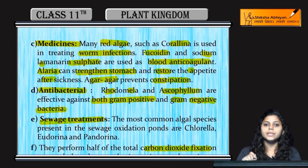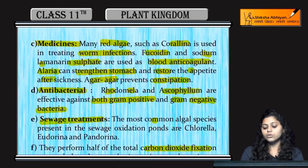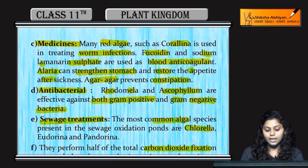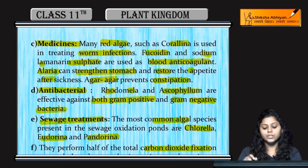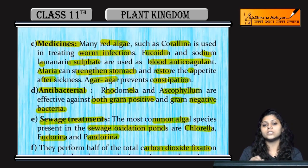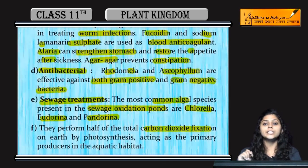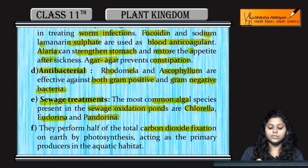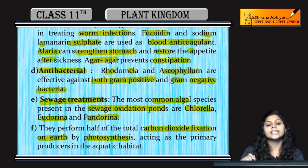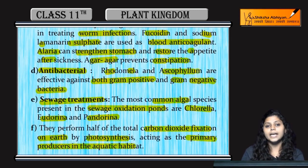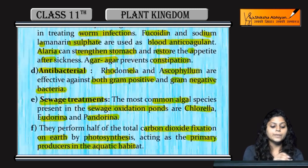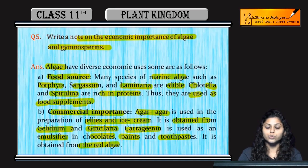Algae are also useful in sewage treatment. Common algae such as chlorella and Oedogonium and Pediastrum are used in sewage oxidation ponds to treat sewage. They also perform carbon dioxide fixation on earth by photosynthesis and act as primary producers in aquatic habitats.